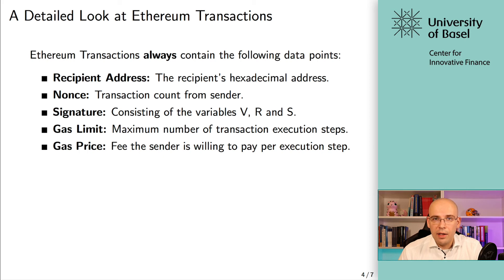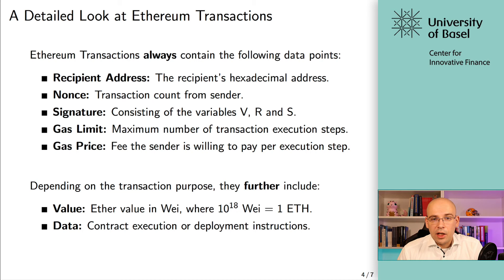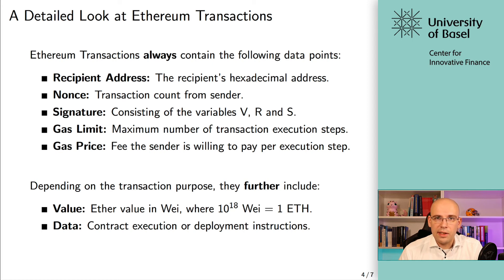We will have a dedicated video just for the transaction fee system, where we'll also talk about EIP-1559 — the new transaction fee system in Ethereum that was recently added and works slightly differently. So in this video I won't say more about transaction fees. In the original implementation you had gas limit and gas price, and it's important to understand you can set the maximum number of computational steps and how much you're willing to pay per execution step. Depending on the transaction purpose, there are further optional things you may add: the value in Wei — where one Ether equals 10 to the power of 18 Wei — and data when you have contract execution or deployment instructions.